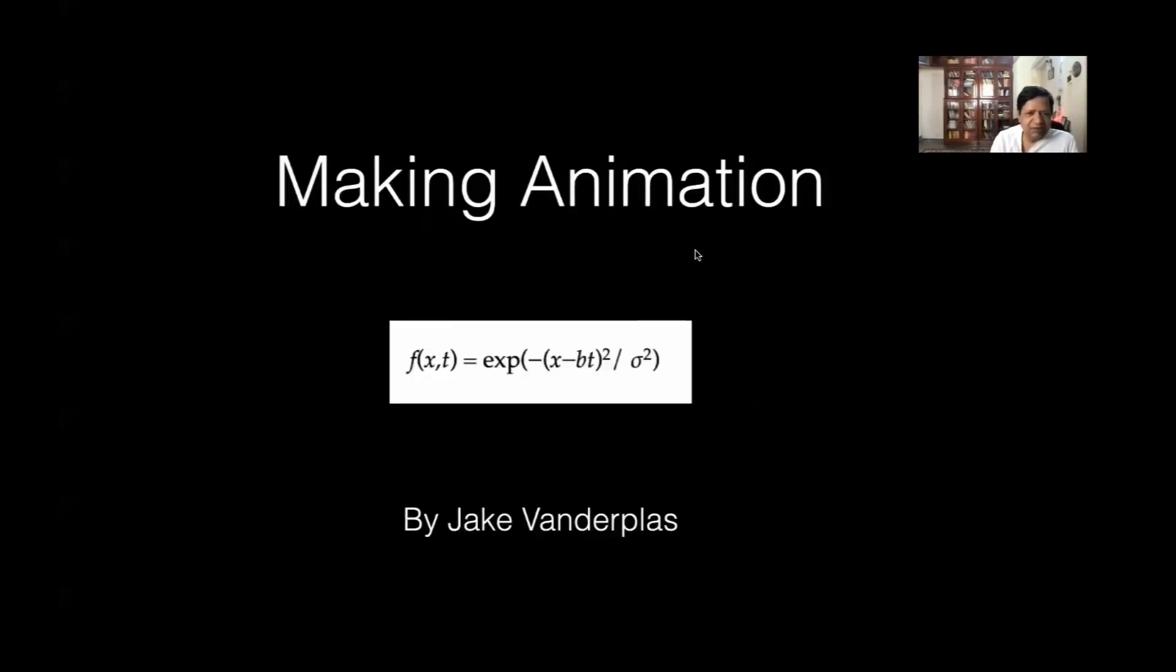Now, we can make an animation. So, this is f(x,t). So, animation is a function of time. So, this thing will be moving in time. Okay. Now, the function which is animated is exponential minus (x minus bt) squared by sigma squared. Okay. So, this is for different times. Okay.